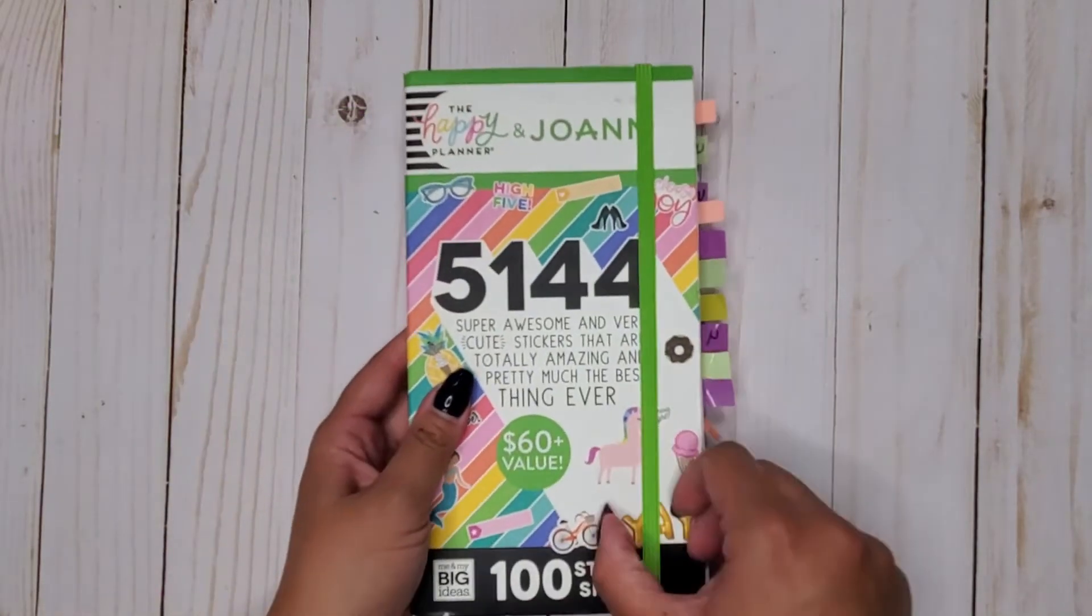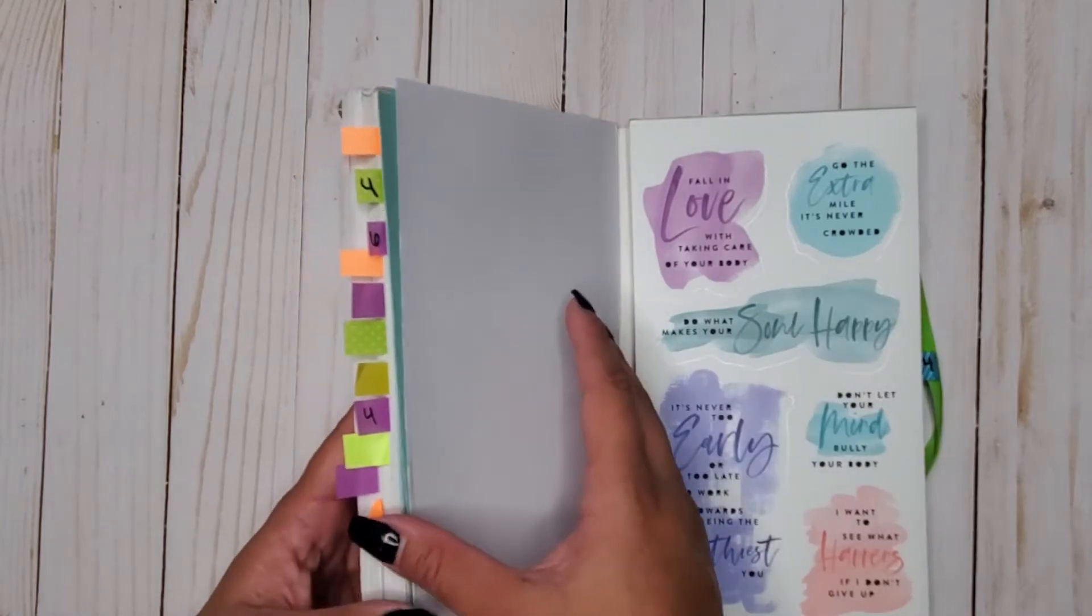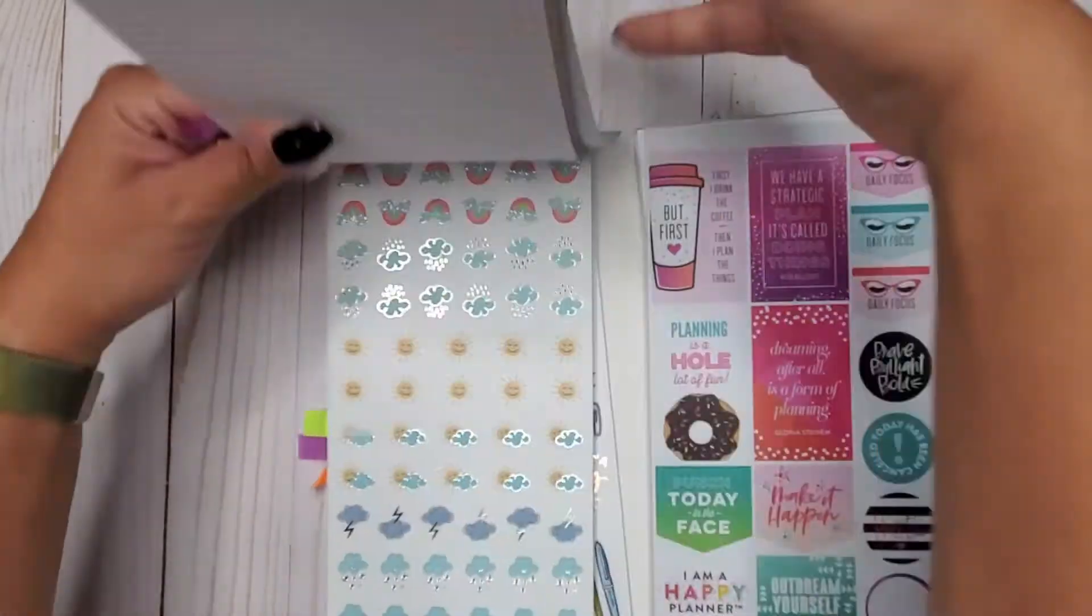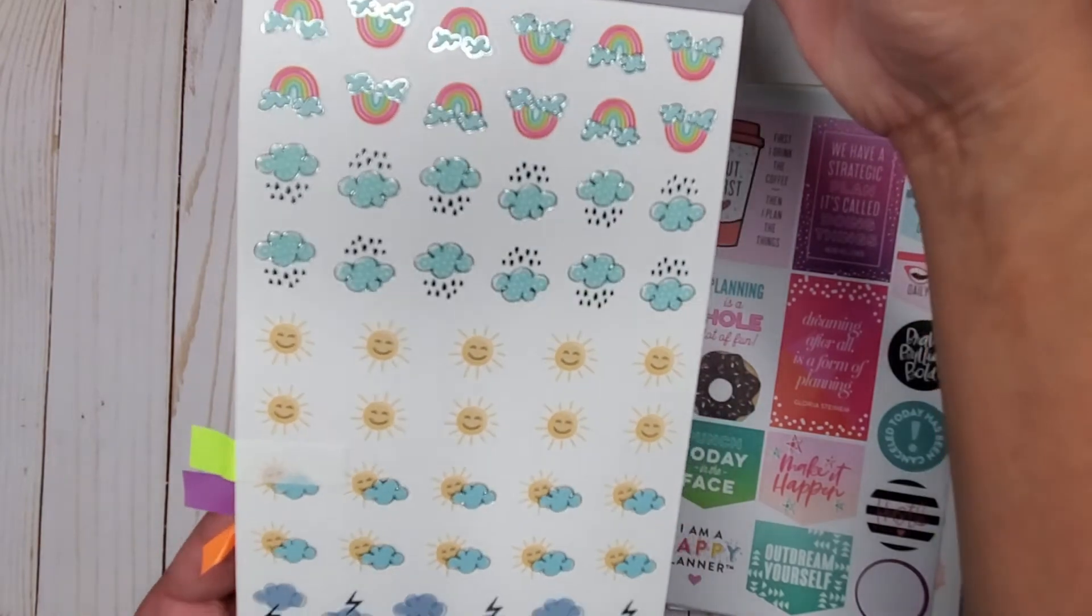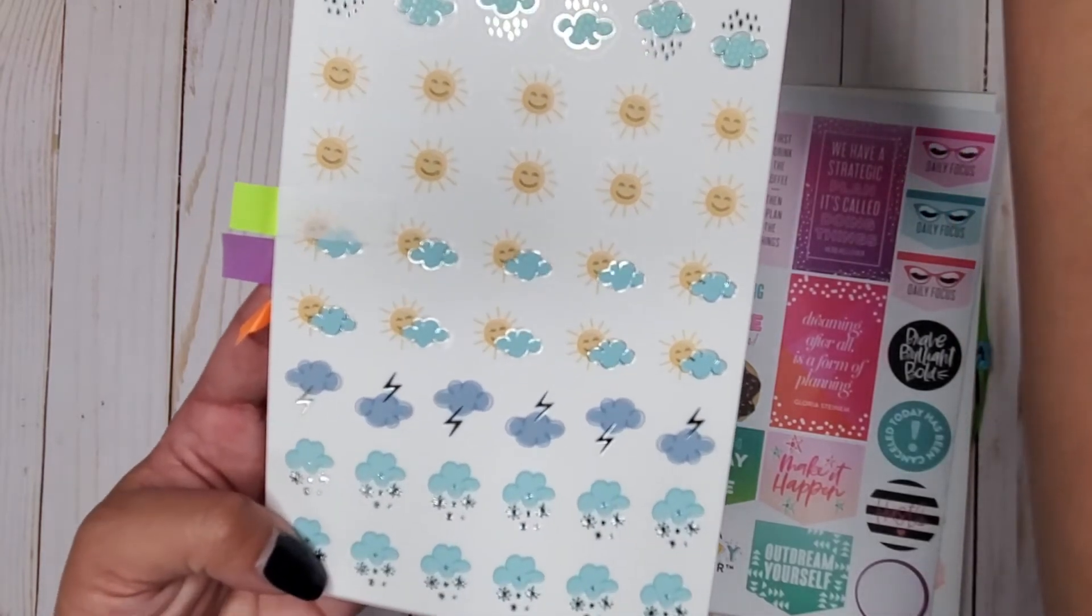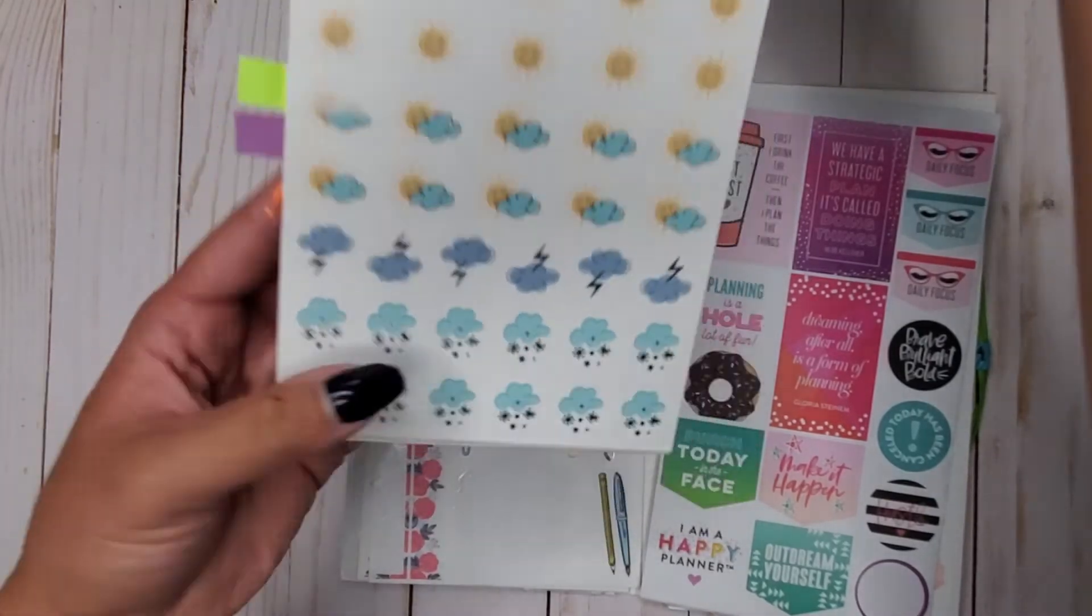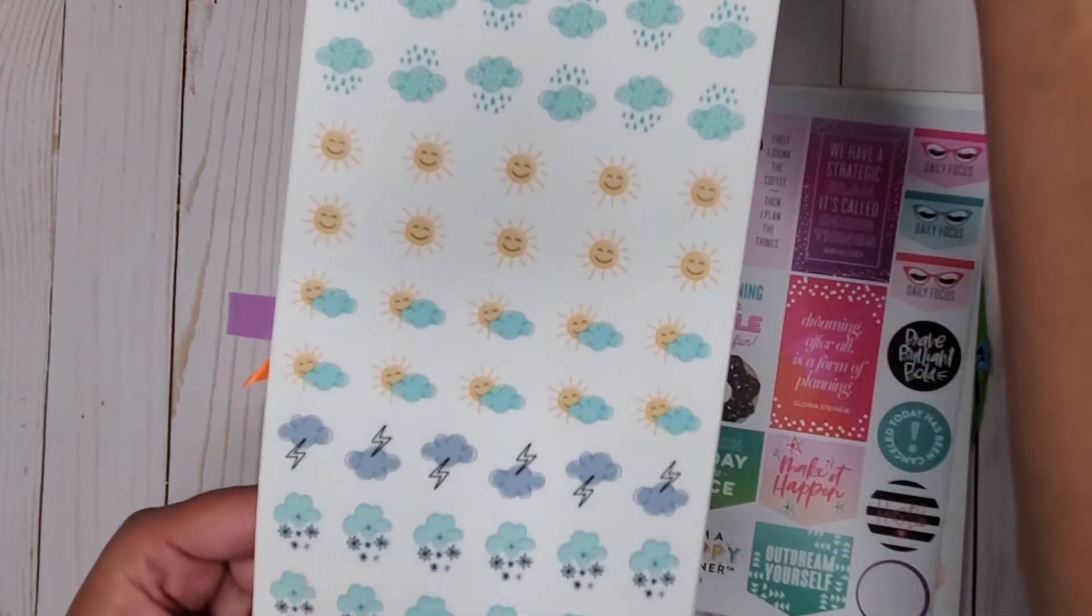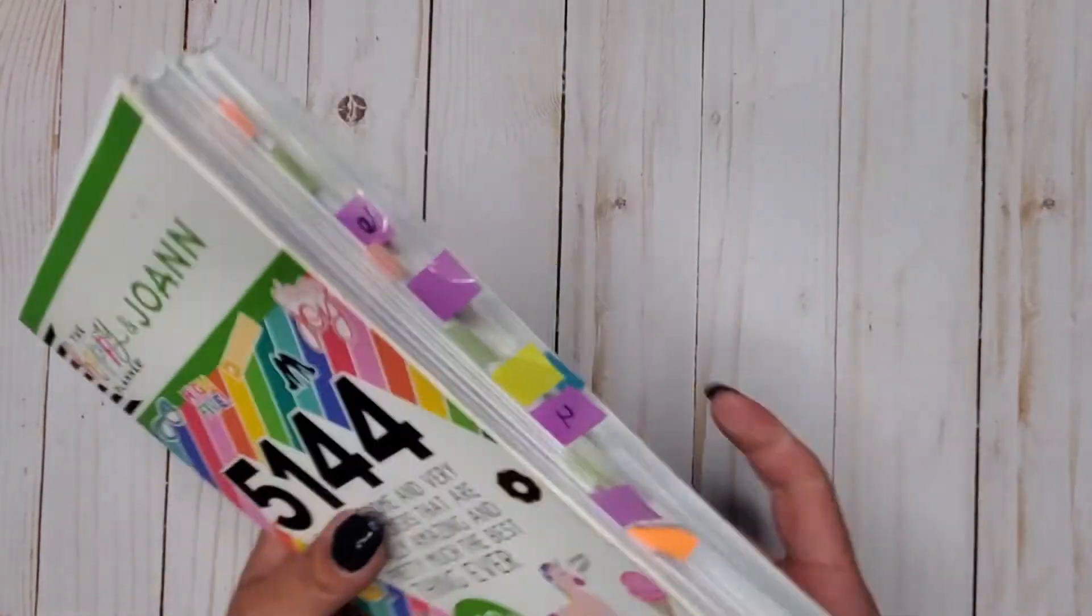Moving into our megas, we have the Joann's mega book. In here we have these fun sheets, they have silver foil on them, they are clear stickers. We have a rainbow, rainstorms, our sun, like sunny day, cloudy but sunny, thunderstorms, and snow storm. We do get two pages but the second page is without the foil but they're both on clear stickers. So that is in the Joann's mega book.